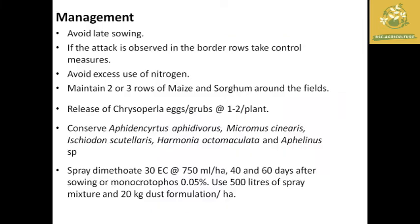Management practices for aphids include avoiding late sowing. If attack is observed, border rows must have control measures taken, including removing affected plants, avoiding excess use of nitrogen, and maintaining two or three rows of maize or sorghum around the field to reduce the entry of aphids. We can also release Chrysoperla eggs or grubs at one to two per plant and conserve natural predators present in the field.